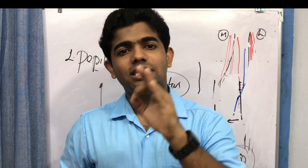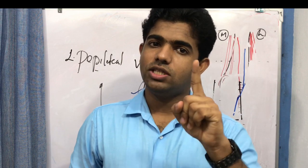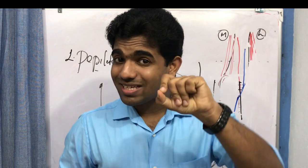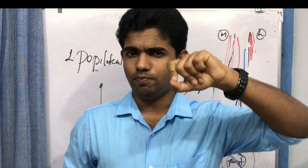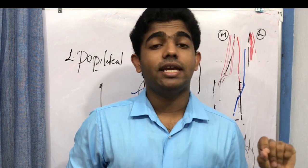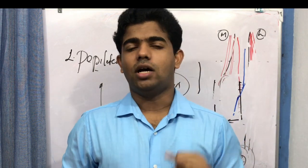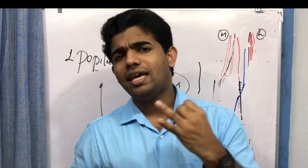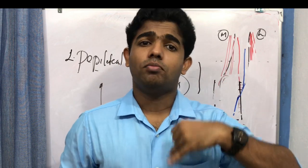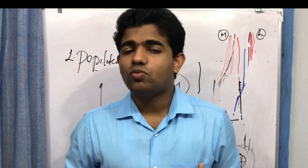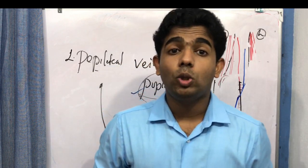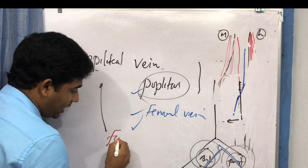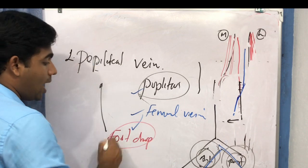Clinically, the popliteal artery is used for measuring blood pressure in the lower limb. However, because it is deep within the popliteal fossa, auscultation is somewhat difficult. Importantly, the popliteal artery is more prone to aneurysm than any other artery in the body — it is one of the most common arteries affected by aneurysm.